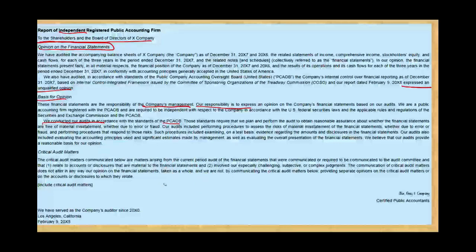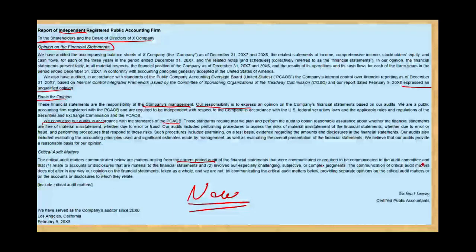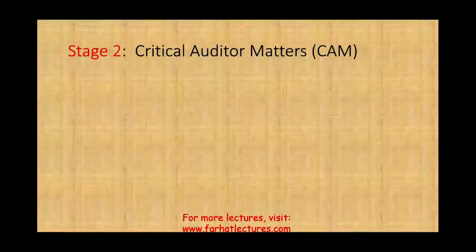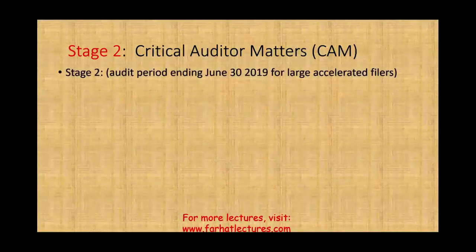The new topic is the Critical Audit Matters. The critical audit matters communicated below are matters arising from the current period — and it only includes the current period. They relate to accounts or disclosures that are material to the financial statements and involve especially challenging, subjective, or complex judgment. This is stage two, effective for audit periods ending June 30, 2019 for large accelerated filers. Right now you're just learning about it.